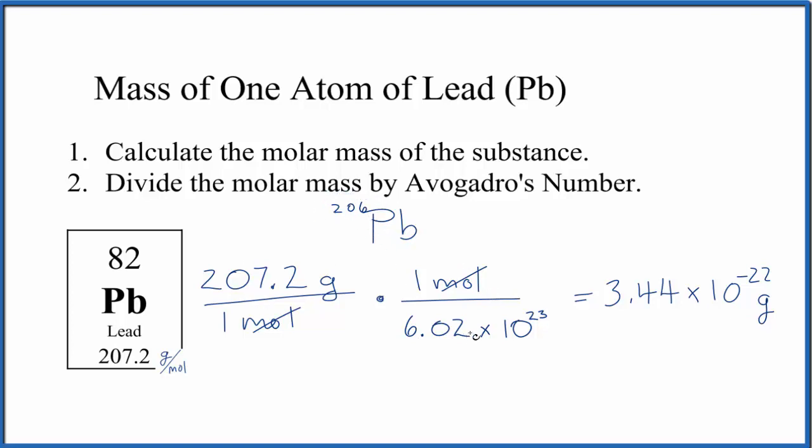Then you would do the math, divide by Avogadro's number, and that would give you the mass of one atom of lead-206, this isotope of lead.